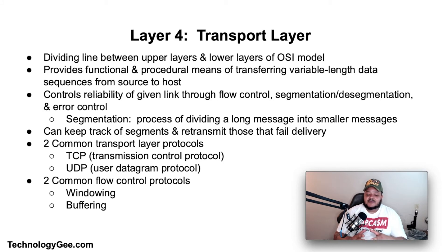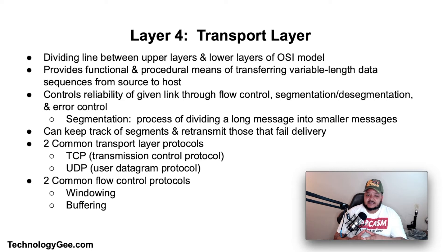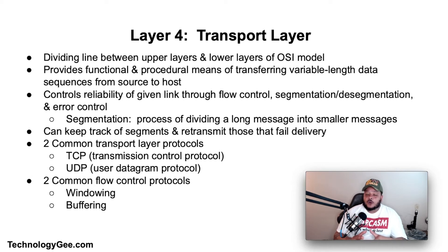The transport layer also provides acknowledgement of successful data transmission and sends the next data if no errors occurred. When the transport layer creates segments out of messages received from the application layer, this is called segmentation — the process of dividing a long message into smaller messages. Two common transport layer protocols are TCP (Transmission Control Protocol), which is a connection-oriented transport protocol, and UDP (User Datagram Protocol), which is a connectionless transport protocol.